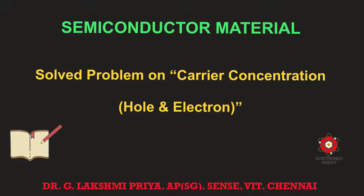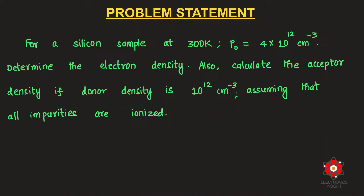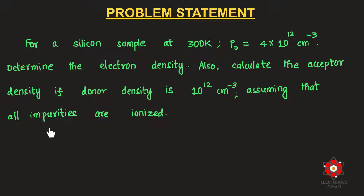The first problem states: for a silicon sample at 300 K, the equilibrium hole concentration is 4×10¹² per cm³. We need to determine the electron density and calculate the acceptor density if the donor density is 10¹² per cm³, assuming all impurities are ionized.